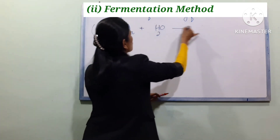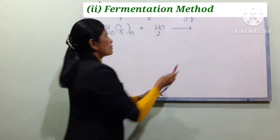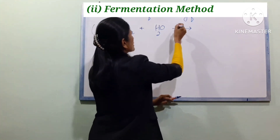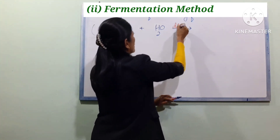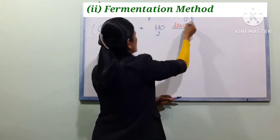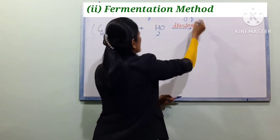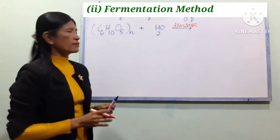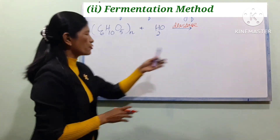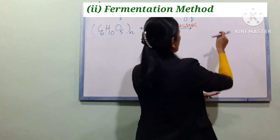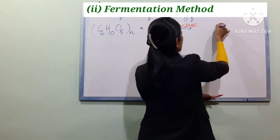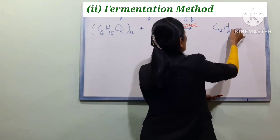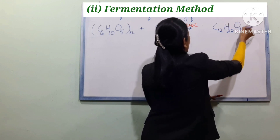In the second step, malt contains the enzyme diastase, spelled D-I-A-S-T-A-S-E. The enzyme diastase breaks down starch further. The product maltose has the formula C12H22O11.